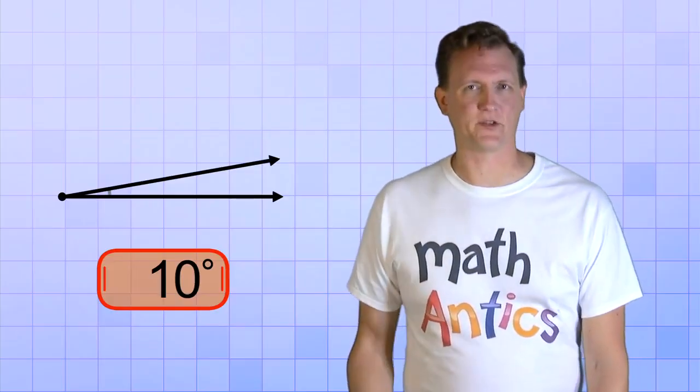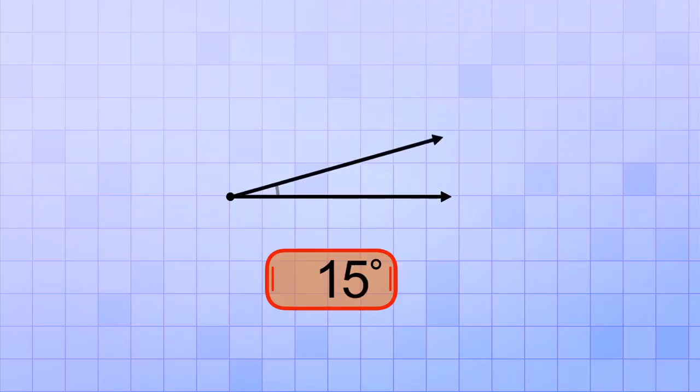So we can see that a 10 degree angle is still a very small angle. So let's keep going, but a little bit faster this time. Alright, that's 15 degrees, 20, 25, 30, 35, 40, and 45.